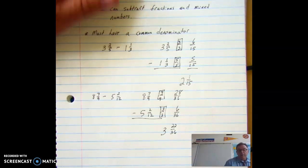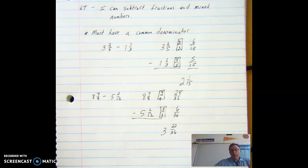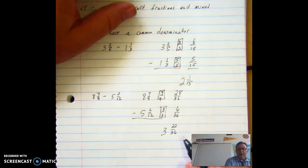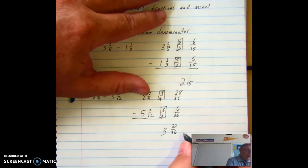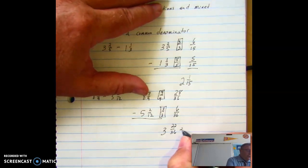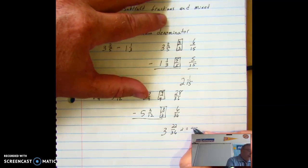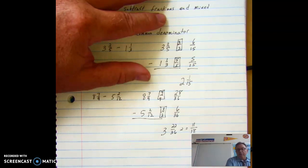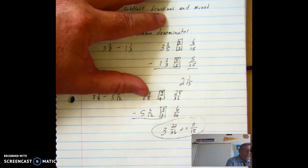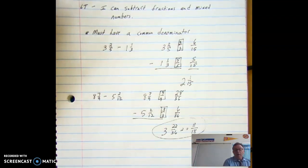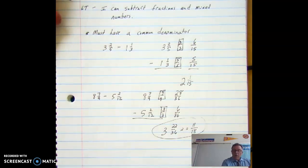Anything you notice? Okay. The difference is not completed. I need to simplify the fraction. And I know that 2 is a factor of both 22 and 36, so my final answer is going to be 3 and 11 eighteenths. There's my final answer. Okay, so both of those work pretty well.